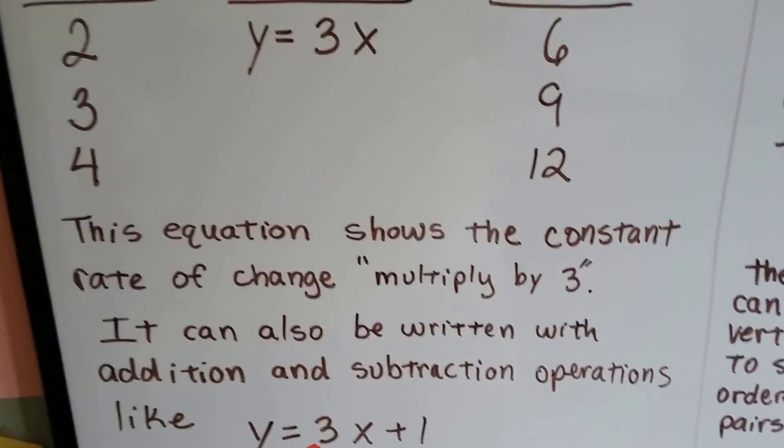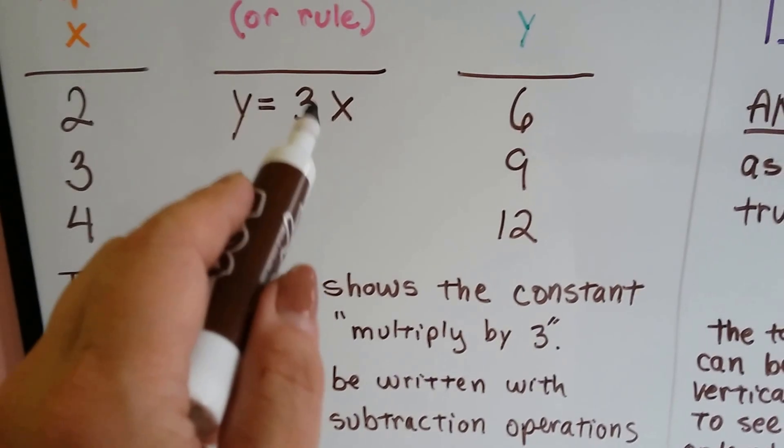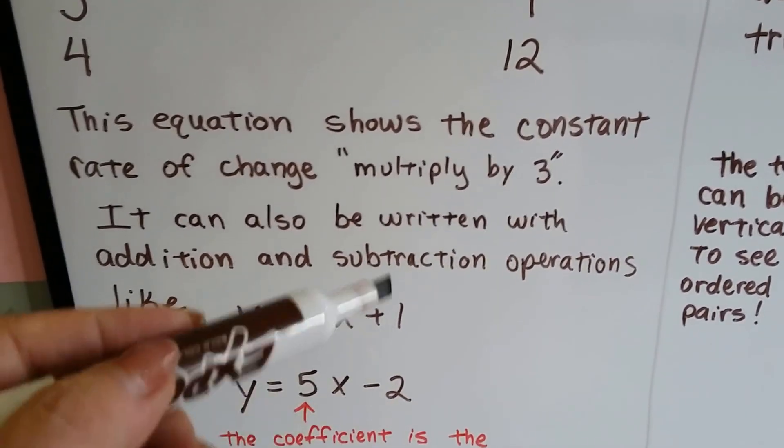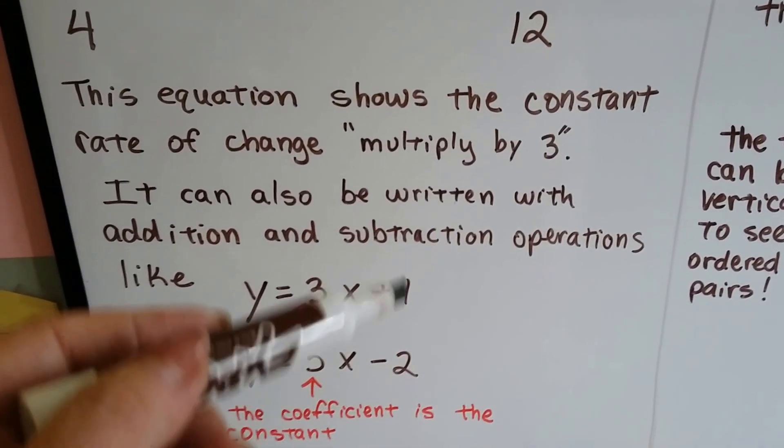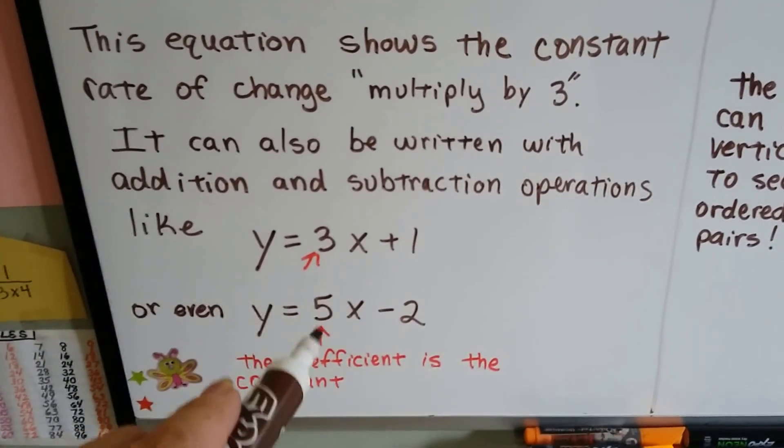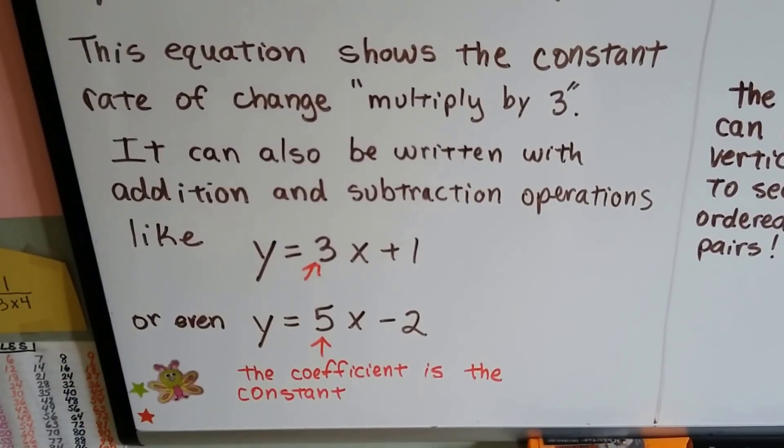So this equation shows the constant rate of change multiplied by 3. It can also be written with addition and subtraction operations, like plus 1 or minus 2, plus 5, minus 6, whatever, at the back end of it. And this number, this coefficient, that's our constant.